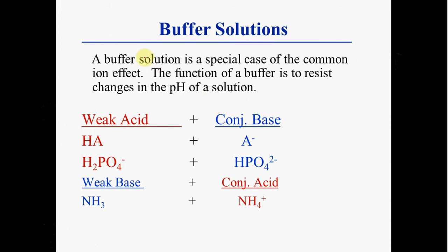This is called a buffer. A buffer is when the common ion effect is used to prevent a change in pH. A buffer is made from a weak acid and its conjugate base, or a weak base and its conjugate acid.